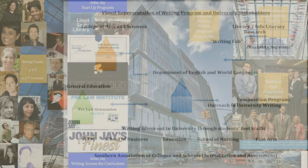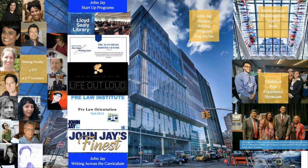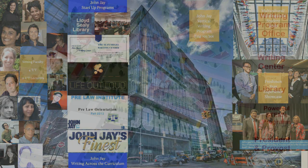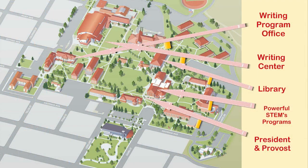Once you have identified campus influences upon the writing program and filled out the worksheet, locate the geographic positions of these campus stakeholders, their locations on your campus, and their vicinities or distances from each other, which may help you to understand their interrelationships with the writing program. Do their physical locations on campus align with the working relationships and frictions that have been cultivated on your campus?